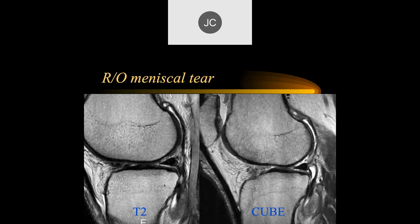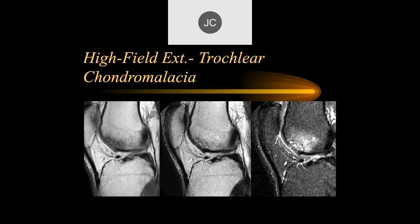We have two sagittals to rule out meniscal tear. We have a T2 and a Q, and it looks like there's at least some moderate grade chondromalacia posteriorly. You can clearly see it's grade four with fluid going all the way to the bone. Here it's a little harder to see, but you can see how the thinner cuts give you much better contrast at the margins.